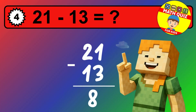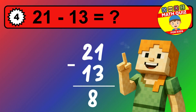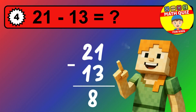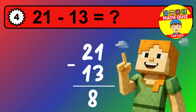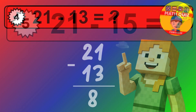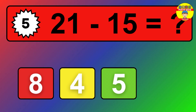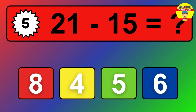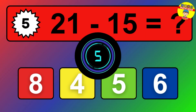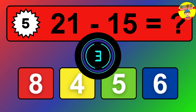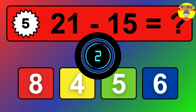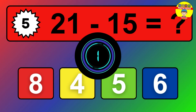We start with the units. 0 minus 5 is not possible, so we need to regroup. We take one 10 from the tens column. Now we have one tens, and the units become 10. Now we subtract. 10 minus 5 is 5. Then we go to the tens. 1 minus 1 is 0. The final answer is 5.